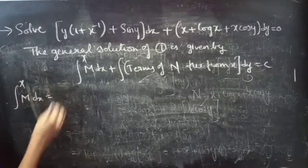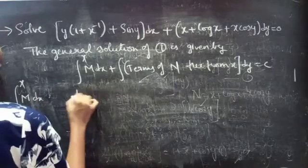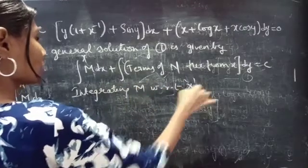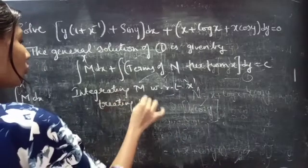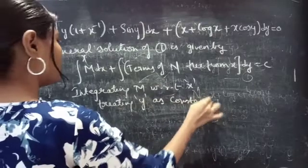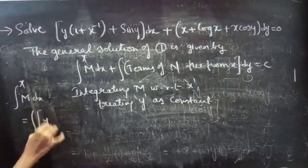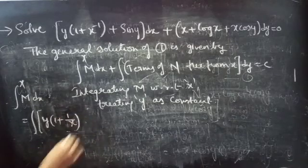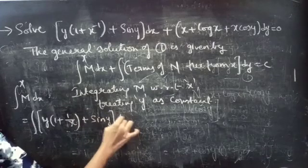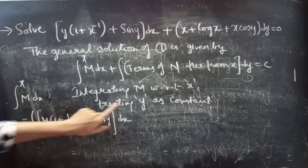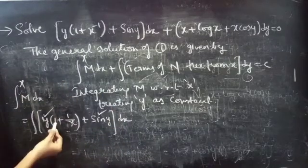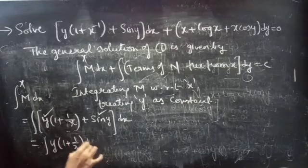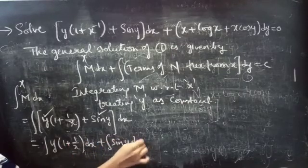First we will find the integral of M dx. Integrating M with respect to x, treating y as constant. This equals to the integral of y into (1 plus 1/x plus sin y) dx, since y and sin y are constants.